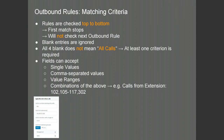The criteria fields of the outbound rules can accept single values — for example, a single extension. Comma-separated values can also be added to have multiple values; for example, 100,101 to have both extensions 100 and 101. You can also use the dash or minus sign to signify a range of values — for example, 100-5 will take extensions 100 to 105 inclusive. Combinations are also possible: for example, 102,105-117,302 will take extensions 102 and 302 as well as the range from 105 to 117 inclusive.